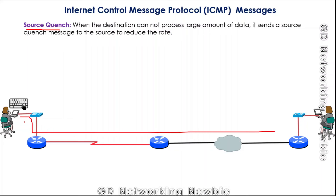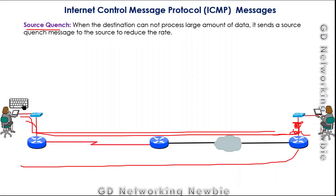Another ICMP message is source quench. If a destination cannot process a large amount of incoming data, it sends a source quench message to the sender asking it to reduce its data rate, perhaps due to buffer size limitations. This message type is now deprecated and other mechanisms are used to achieve the same goal of congestion control.